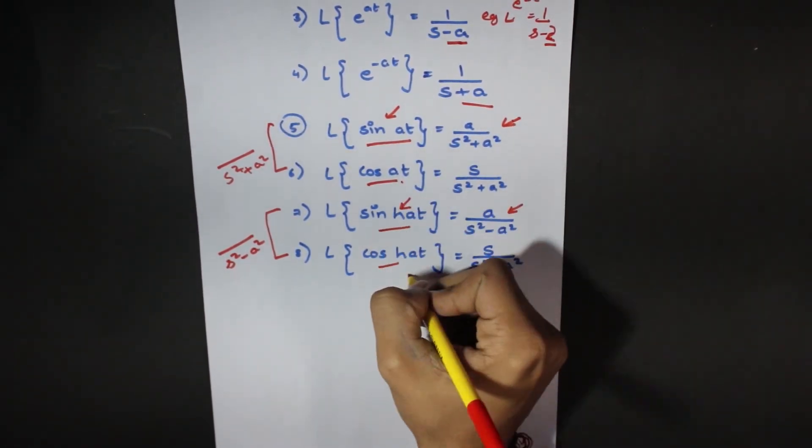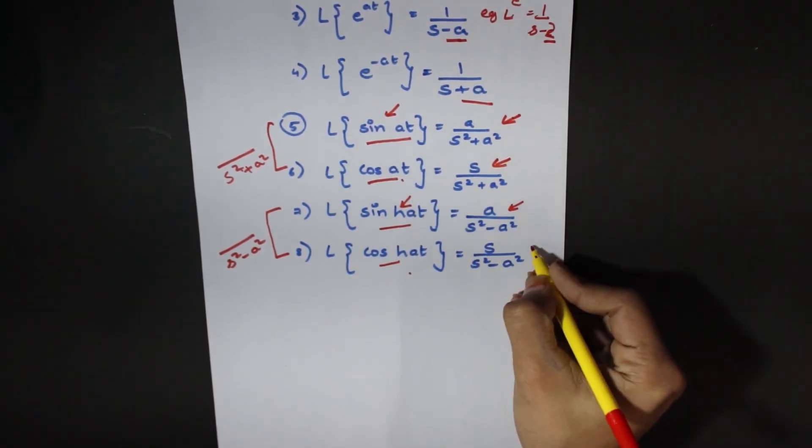For cosine or cosh, this will be s in the numerator.